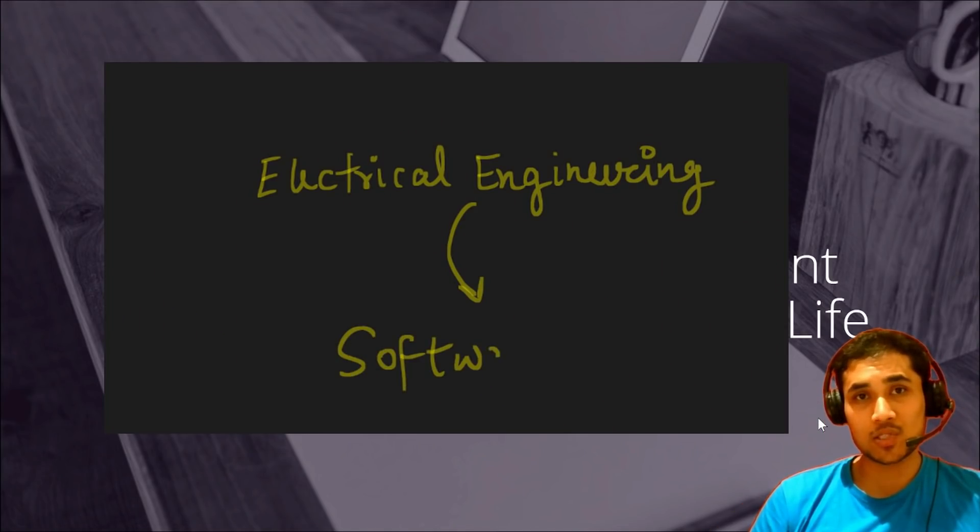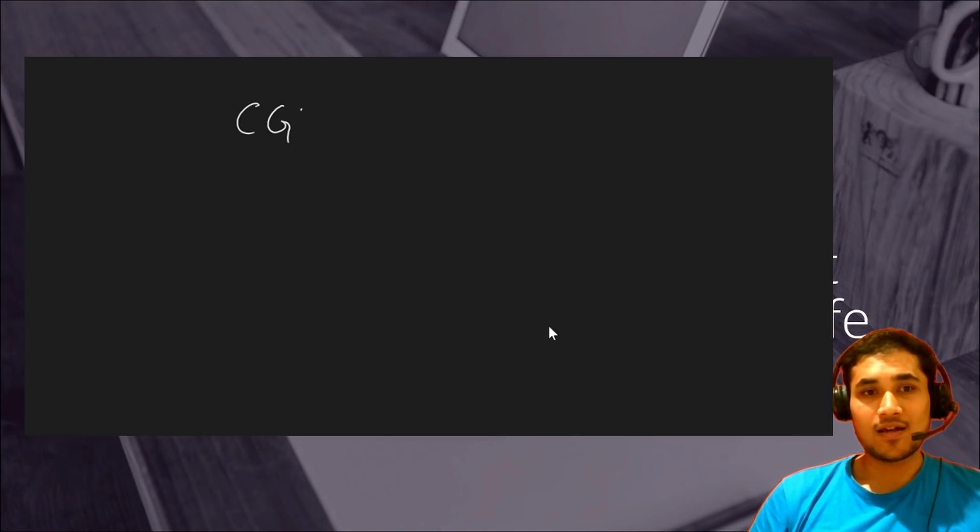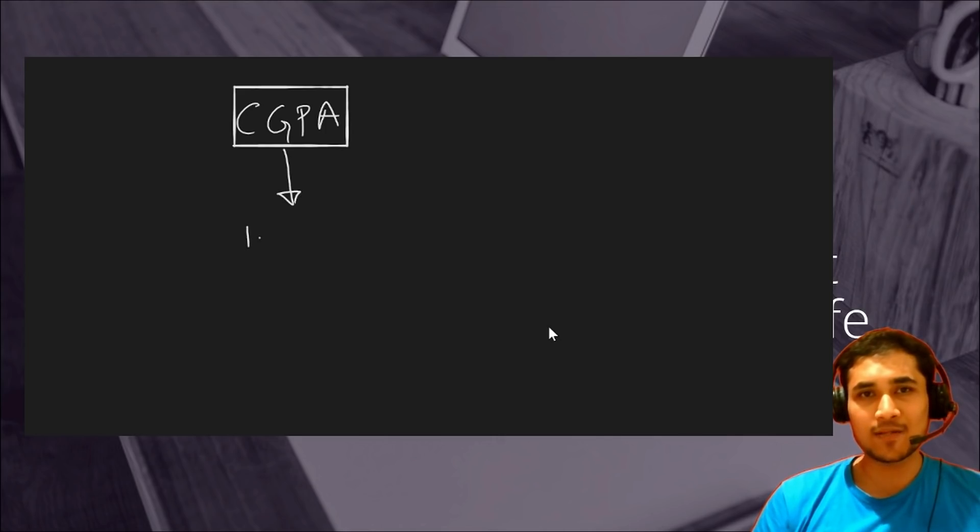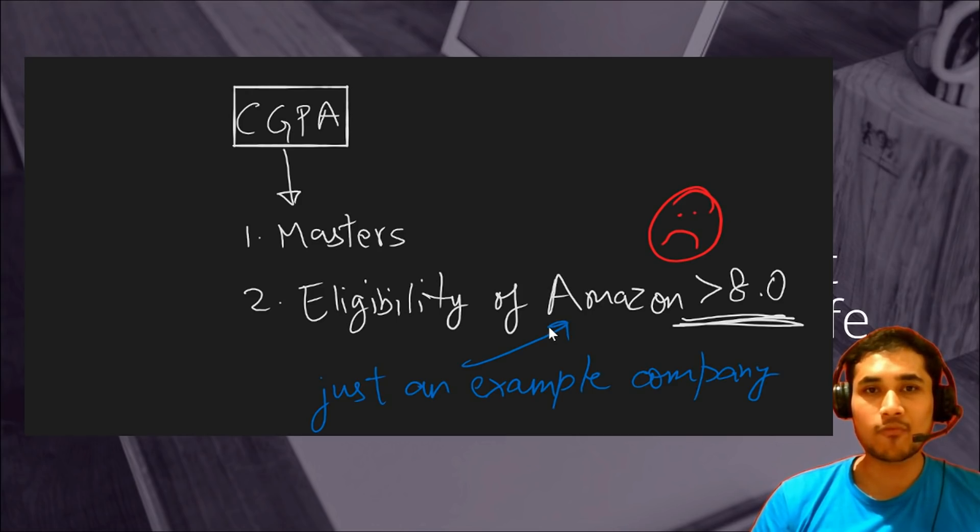When I was in IIT Roorkee, I was studying electrical engineering and I realized it's difficult to get into the software engineering world if you're not from computer science background. You have to deal with your academics as well because maintaining a good CGPA is very important for masters in computer science. A lot of companies like Adobe, Amazon and Microsoft have some minimum requirement of your CGPA when they come to hiring at campuses. So as a student you have to maintain good CGPA and also be really good at programming.